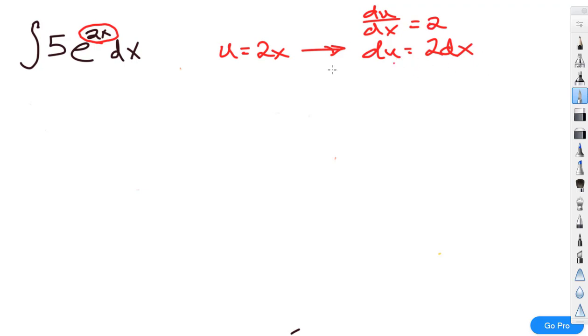So let's go ahead and do that substitution. But really quick before I do, notice that I just have the dx here, I don't have the 2 dx. So what I can do is I can divide both sides by 2, which would give me 1 half du equals my dx. Great.